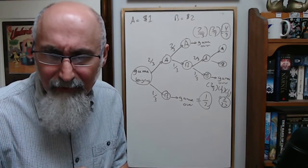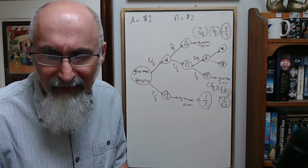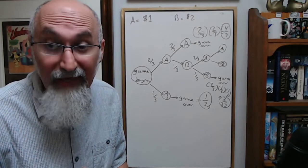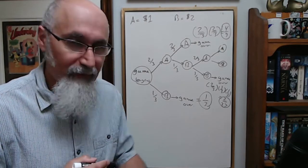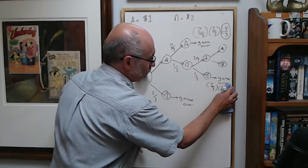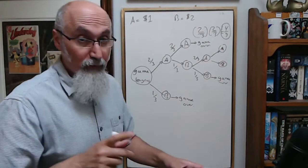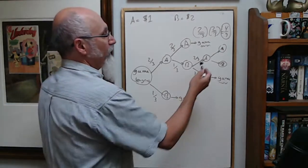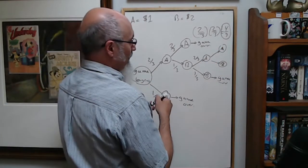So you can add these guys up so far. What was the original question again? What is the probability of A winning? This is B winning, so we don't care about this one. This is also B winning, so we don't care about this one. So far, probability of A winning is 4/9.